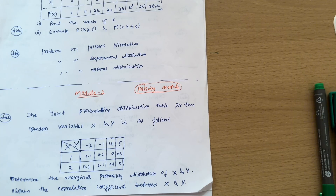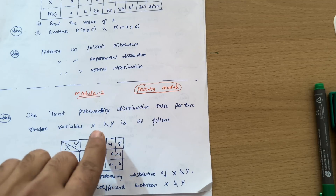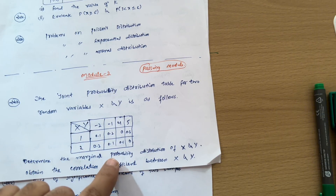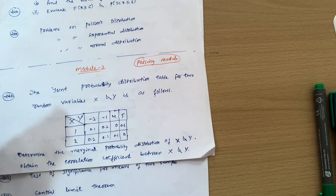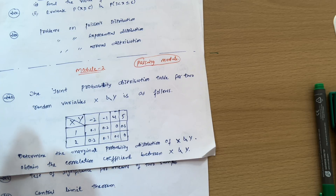In Module 2, the first topic is joint probability distribution — it is a very simple topic and you can easily acquire 7 marks by understanding the concept, then doing varieties of problems. Only two to three problems from previous year papers are enough. A joint probability distribution table for two random variables X and Y will be given; you are supposed to find the marginal probability distribution of X and Y, obtain the correlation coefficient between X and Y, and sometimes find the expectation of X and Y. Problem-solving videos are available on my channel — I will also provide a playlist link in the description box.